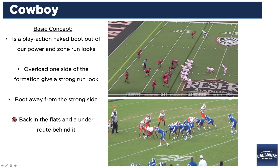We like to overload one side of the ball or one side of the formation, giving us a strong run look. Then we're going to boot away from that strong side or boot away from that play action side. Then we're going to get the back out in the flats with the under route coming in behind it. On this top picture, you can see the formation that Stanford used against Oregon State — they're in a strong left run formation here.